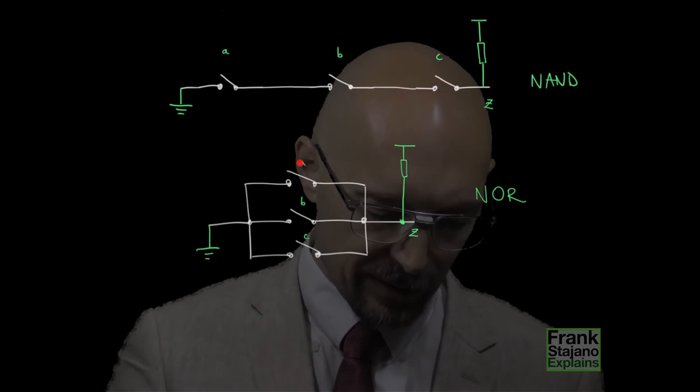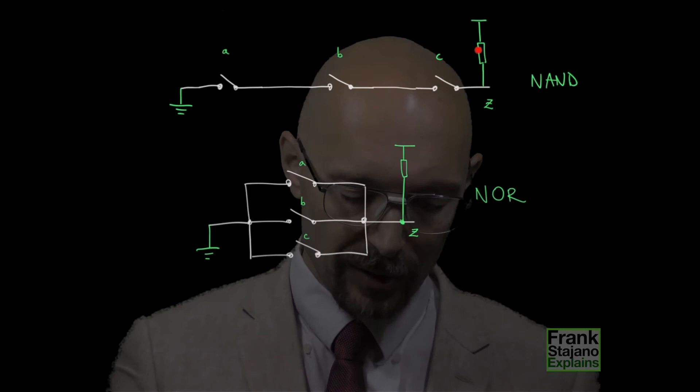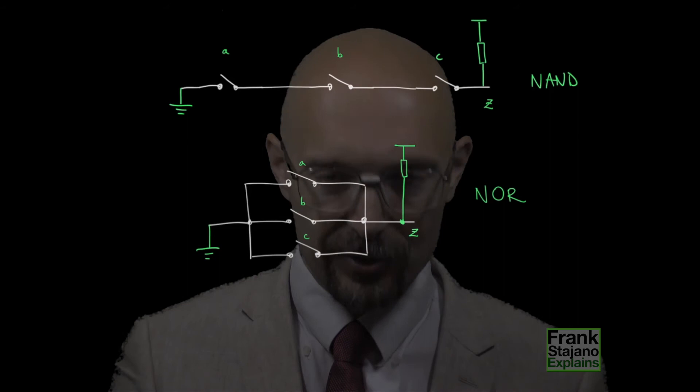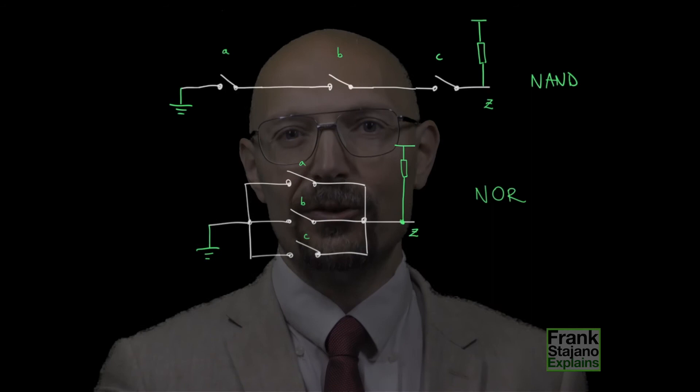And so, this is the truth table of NOR. So, like before, the topology of the switches gives us, in this case, AND, in this case, OR. Whereas, having attached the ground and power supply in this way gives us the inversion, the NOT, which is the new part compared to before. So, that's great, because by using this trick that gives us the ability to do NOT, capability to invert, we can now implement all possible logic functions.